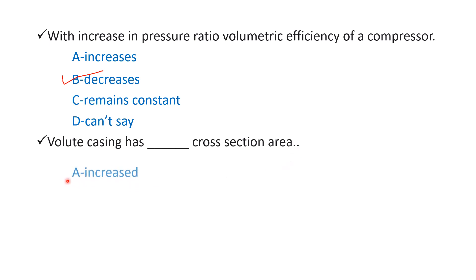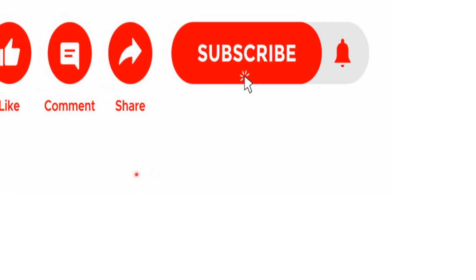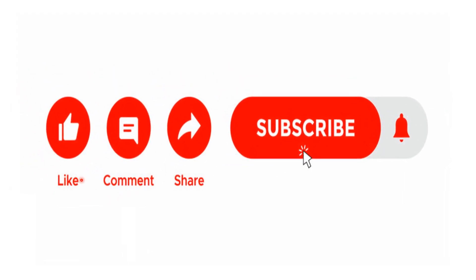Next question: volute casing has blank cross-section area — Option A: increased, Option B: decreased, Option C: same, Option D: none of the above. The right answer is Option A — increased. Volute casing ka cross-section area increased hota hai. Please like, comment, share and subscribe. Thank you.